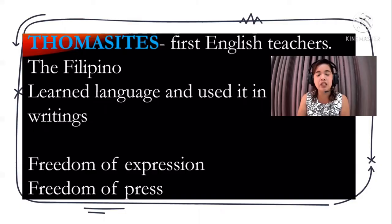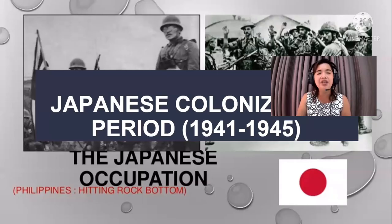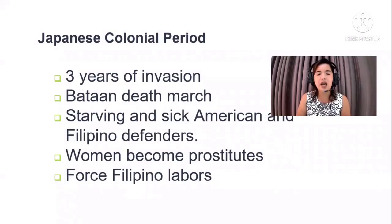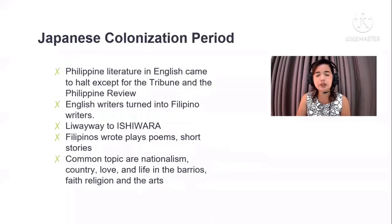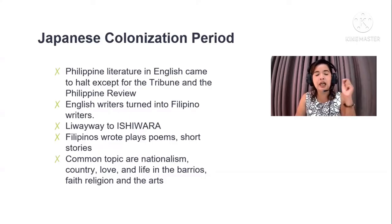The Thomasites were the first English teachers, and Filipinos learned the language and used it in their writings. Freedom of expression and freedom of the press were not prohibited — writers had the free will to write. Then came the Japanese period from 1941 to 1945. There were three years of invasion, including the Bataan Death March. American and Filipino defenders were starving and sick, women became prostitutes, and Filipinos became laborers. Philippine literature in English came to a halt.